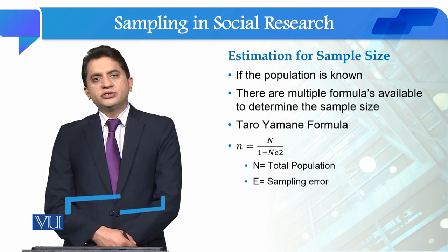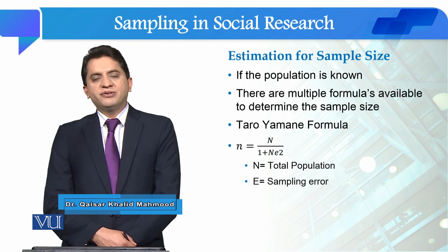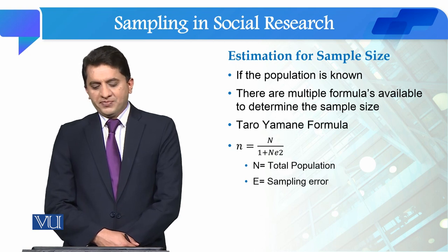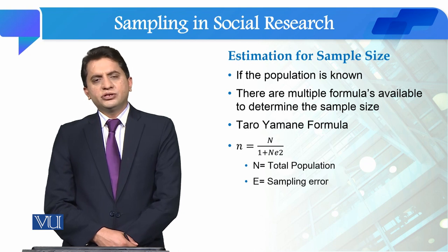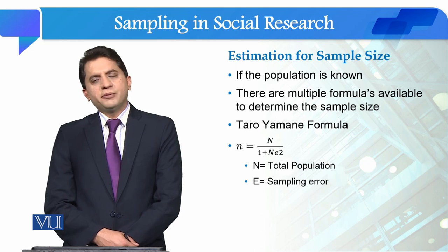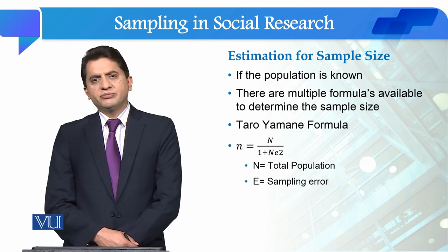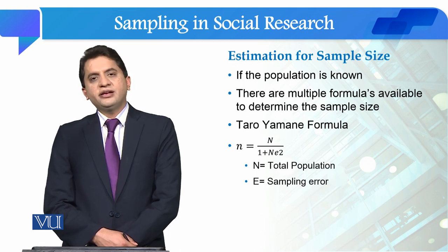There are many statistical formulas available. There is a renowned formula — the Taro-Yamane formula. It is a simple one and the most mostly used formula in social sciences. This formula was developed in 1969 by Taro-Yamane. The formula is: sample size n equals population N divided by 1 plus N times e squared.